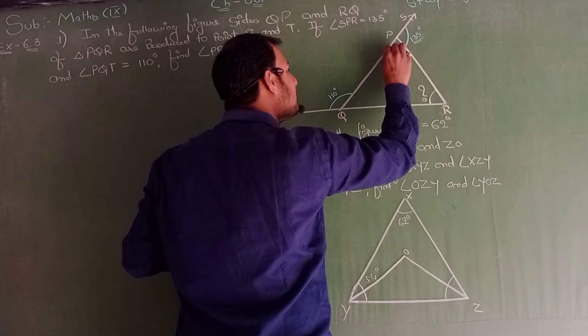दूसरी method: यहाँ पे भी straight line assume कर सकते हो। 180° − 135° = 45°। अब यह एक triangle है, तीनों का addition 180° होता है: 45° + 70° = 115°, तो 180° − 115° = 65°। इस method से भी PRQ = 65° मिलता है। यह theory-based method है।